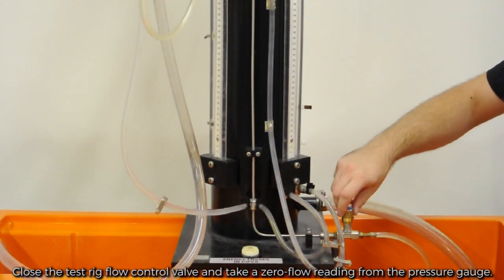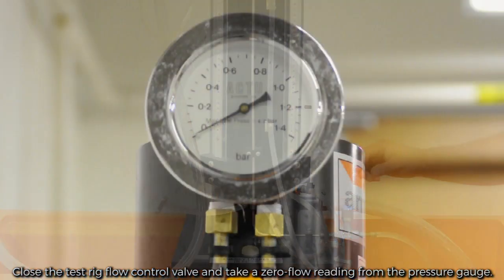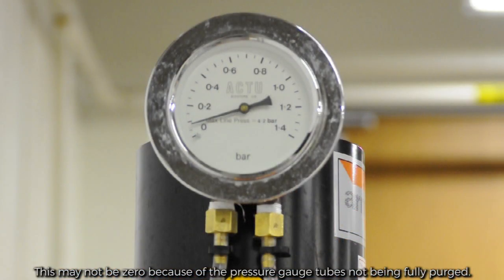Close the test rig flow control valve and take a zero flow reading from the pressure gauge. This may not be zero because the pressure gauge tubes are not being fully purged.